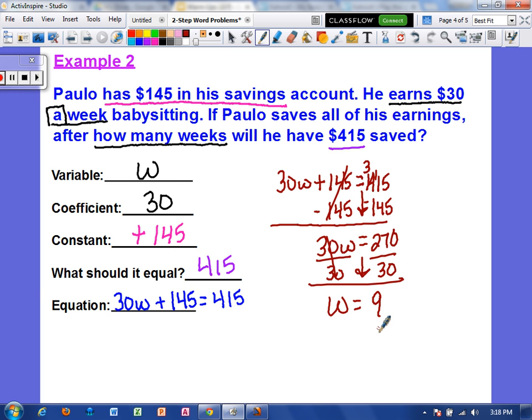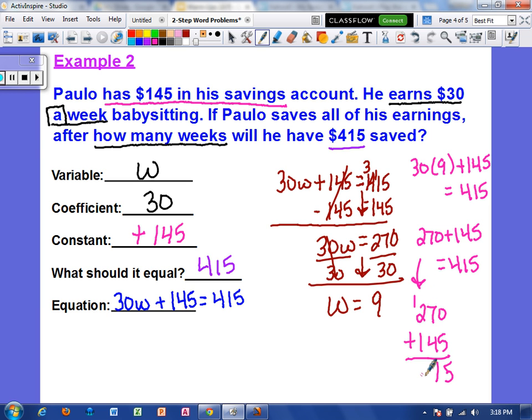The number of weeks would be 9. But let's go ahead and check and make sure that's accurate. So 30 times 9 plus 145 should equal 415. Well if 3 times 9 is 27, 30 times 9 would be 270. Now since this is something we don't know off the top of our heads we want to actually work it out. So 270 plus 145, will that give us 415? 0 plus 5 is 5, 7 plus 4 is 11, 1, 2, and 1 make a 4. So yes, the left and right side do match.